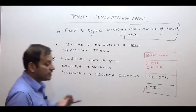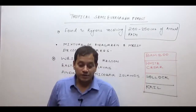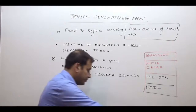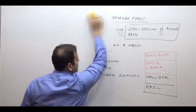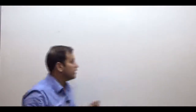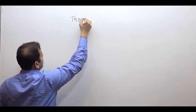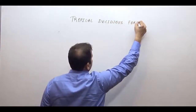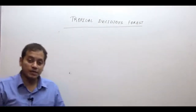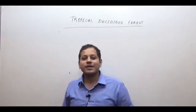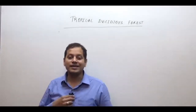Now let us come to the next forest — the deciduous type of forest. The tropical deciduous forests have two types: moist deciduous and dry deciduous. I will continue in the next lecture. Thank you very much.